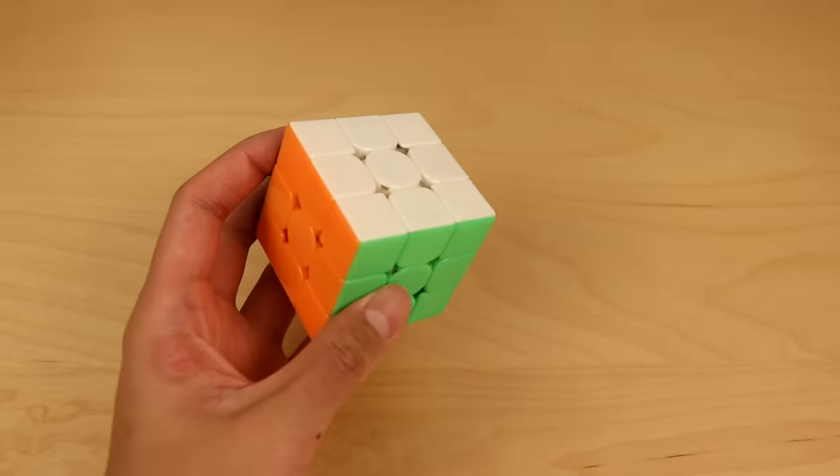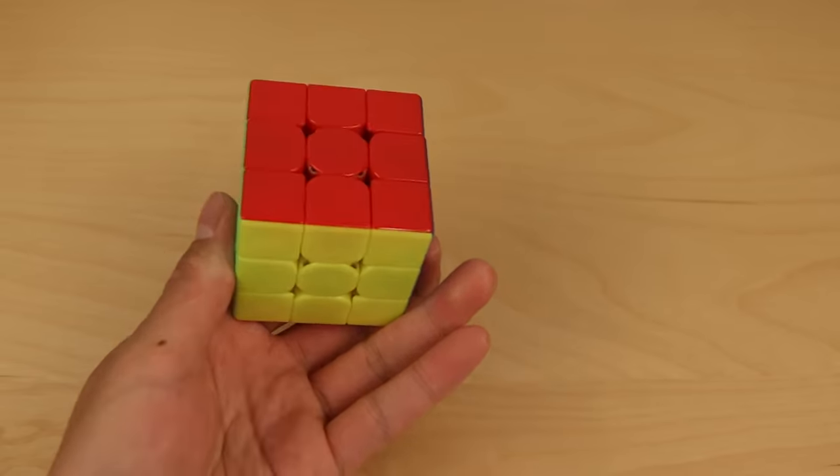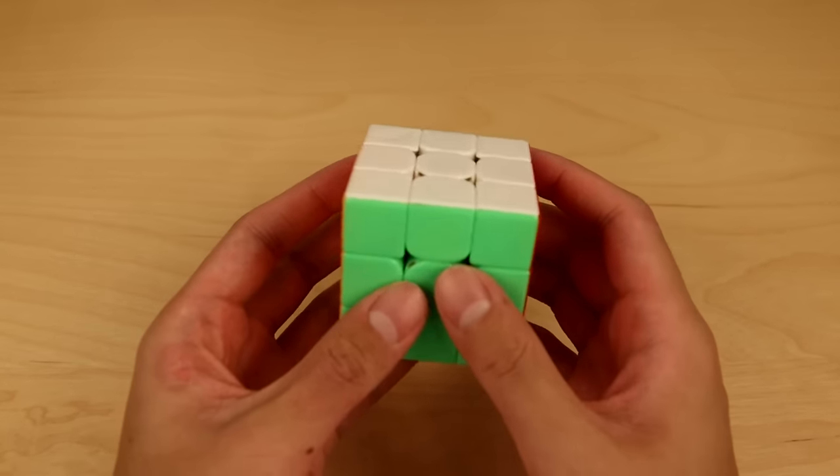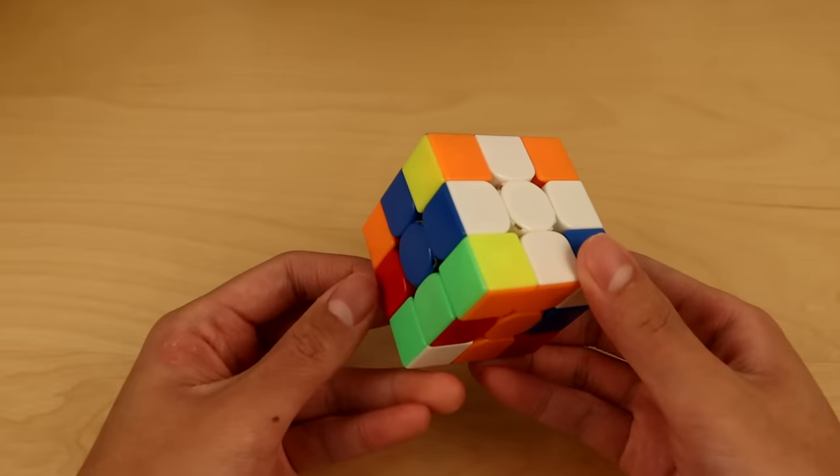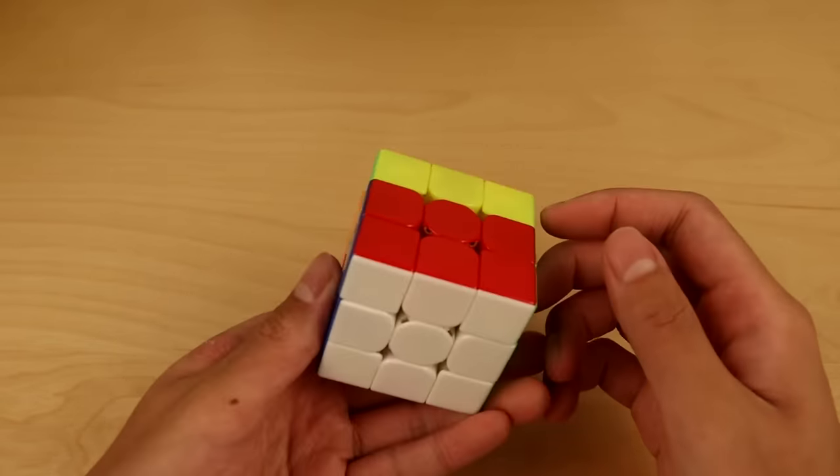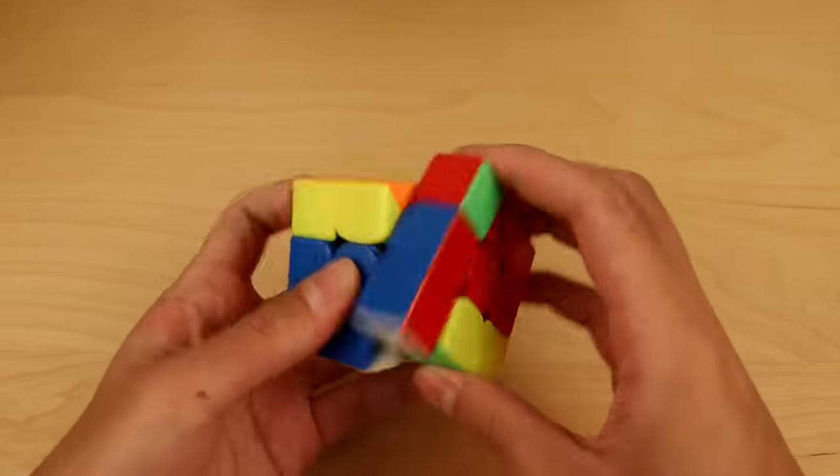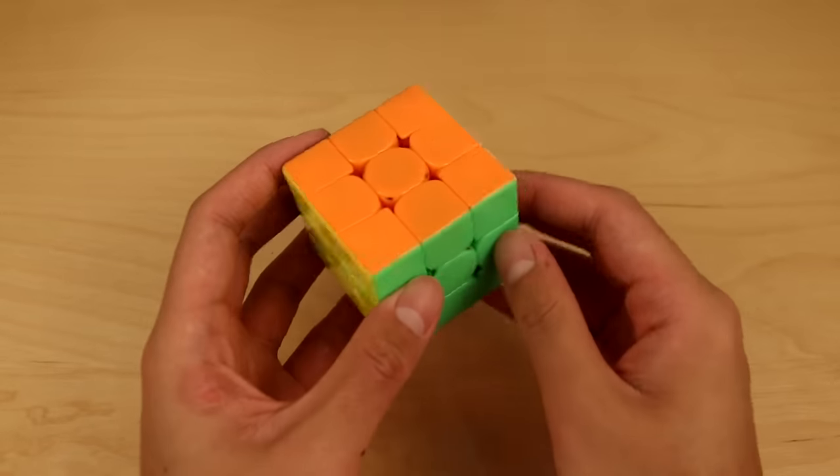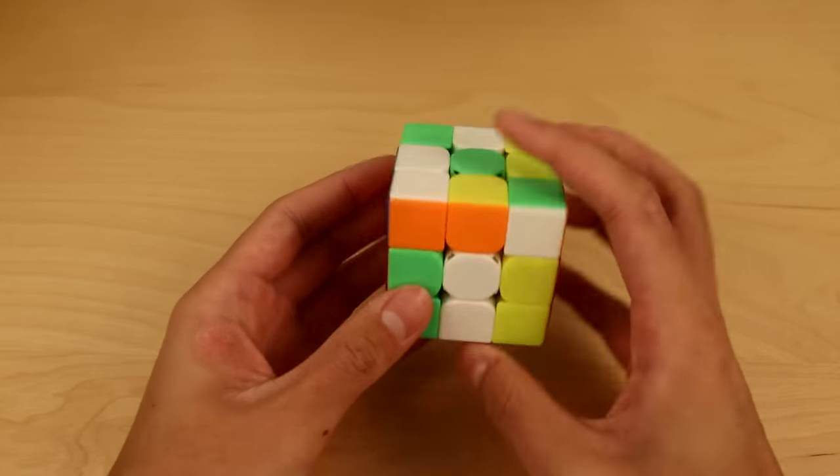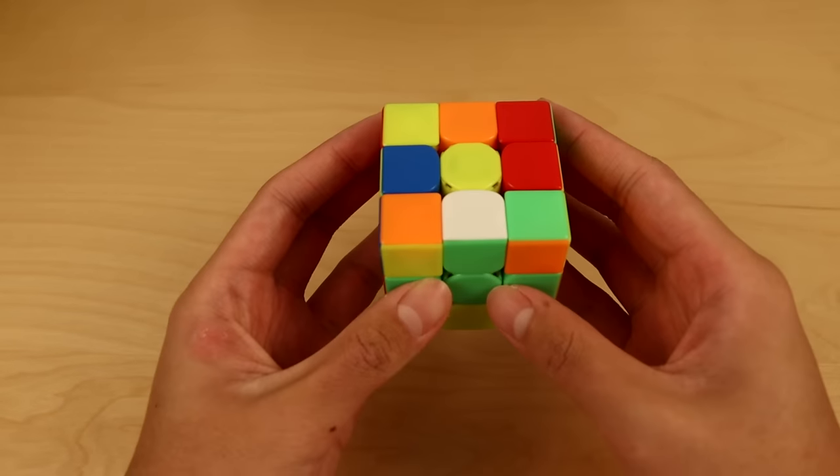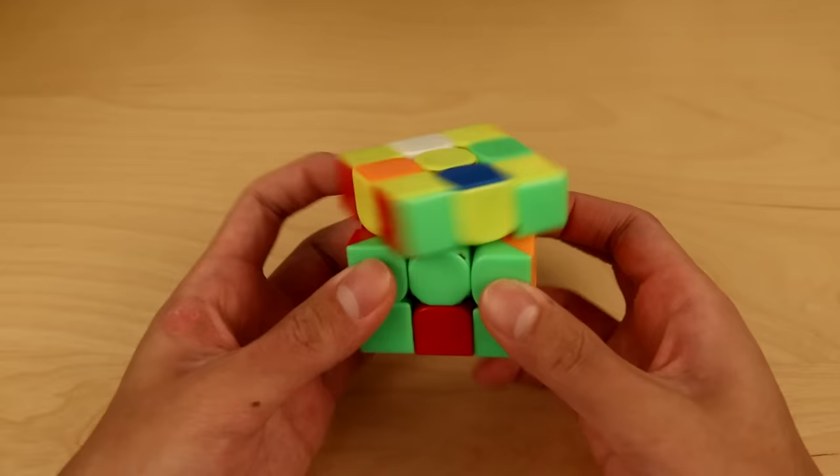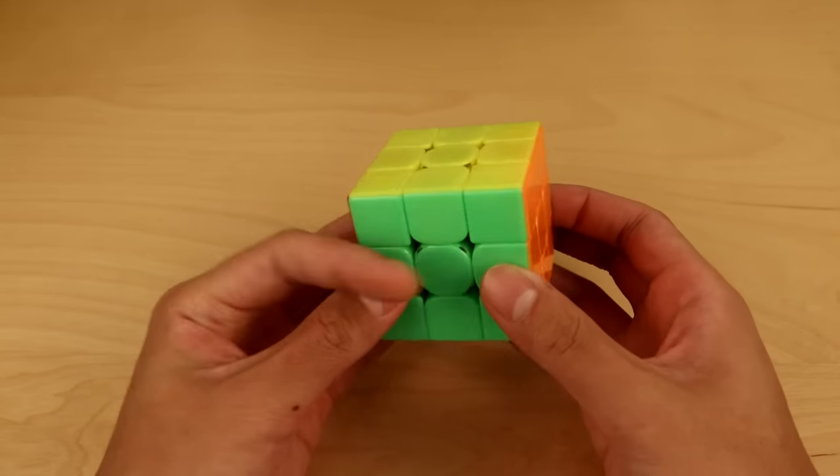With 3x3 one-handed, the most advanced method is actually going to be Roux. Currently, both of the world records are with CFOP, where you build the cross, F2L, OLL, and PLL to solve the cube. But Roux is quite different. In that method, you build a left block, a right block, corners, then you solve the rest of the cube in one go.